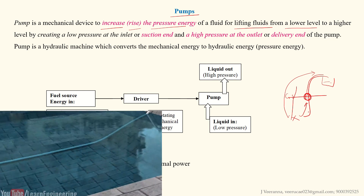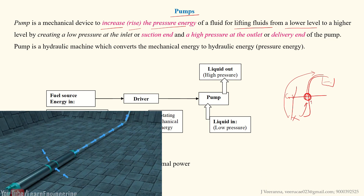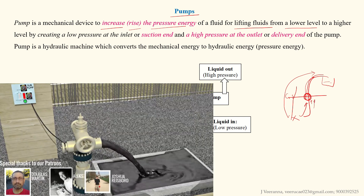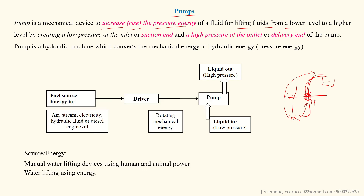Water comes into the pump's inlet and is delivered or lifted upward to the outlet. This means creating low pressure at the inlet — also called the suction end or suction side — and creating higher pressure at the outlet, also called the delivery end.